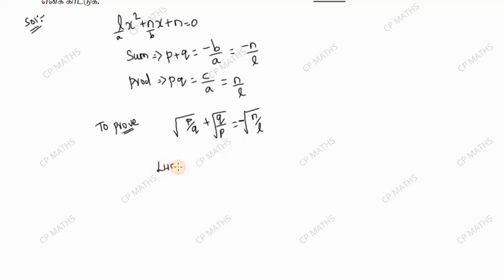I'll take LHS: root of p by q plus root of q by p. You know how to do this - you need LCM. First you need to do root p by root q plus root q by root p, so you need to cross multiply.